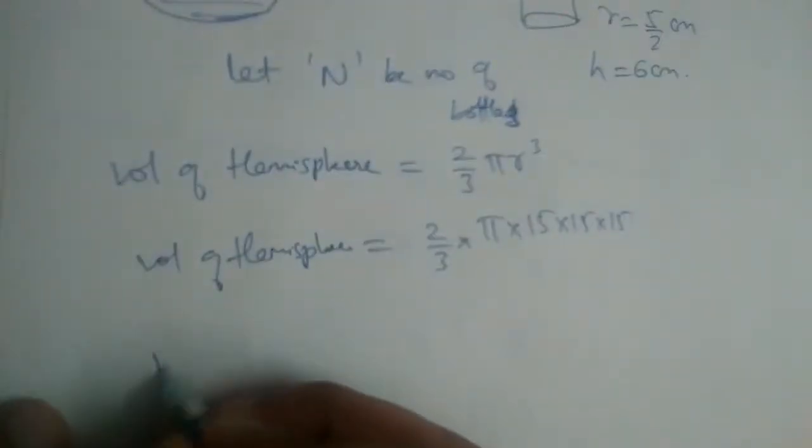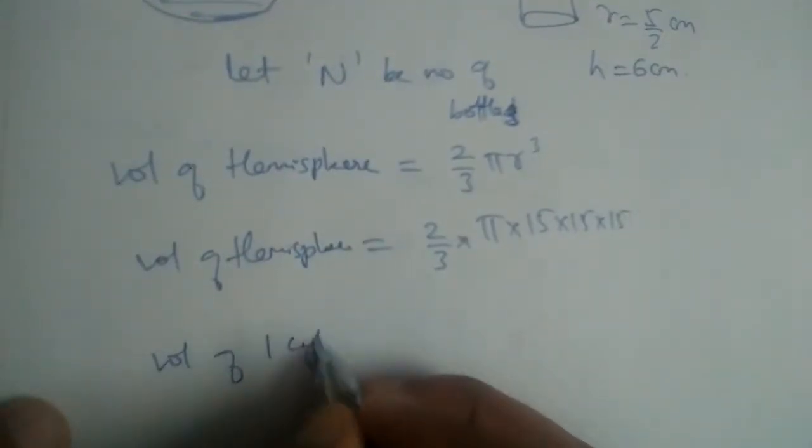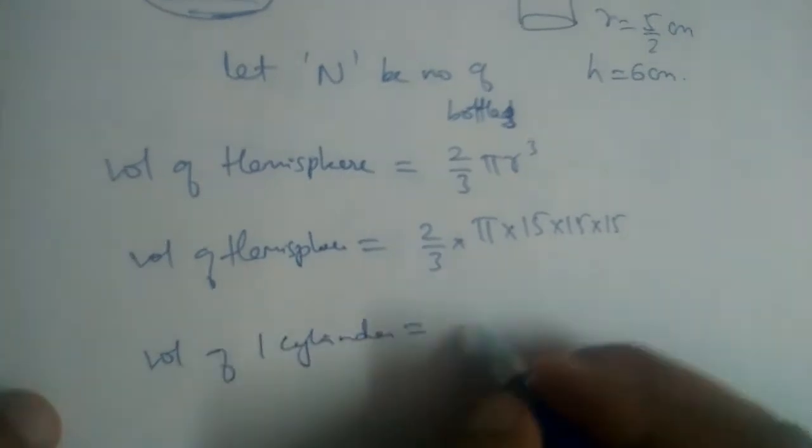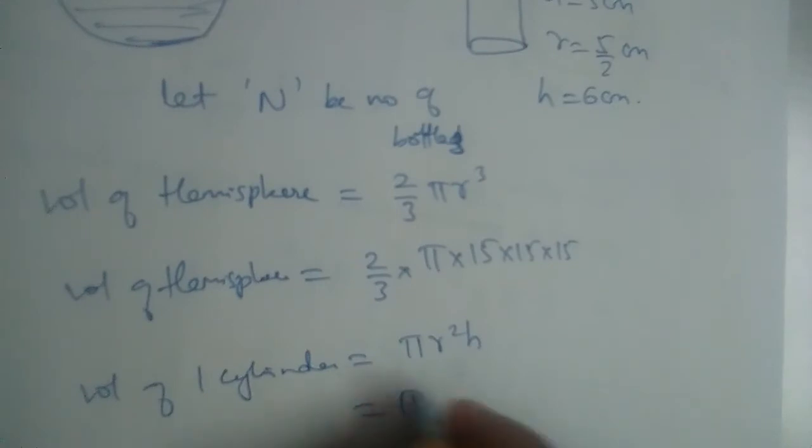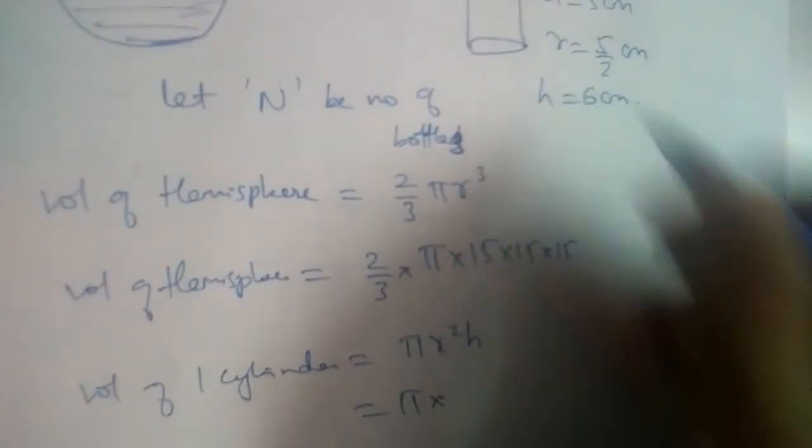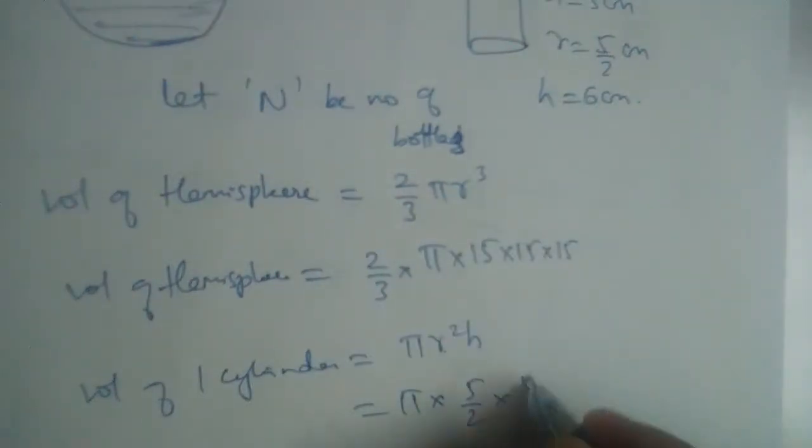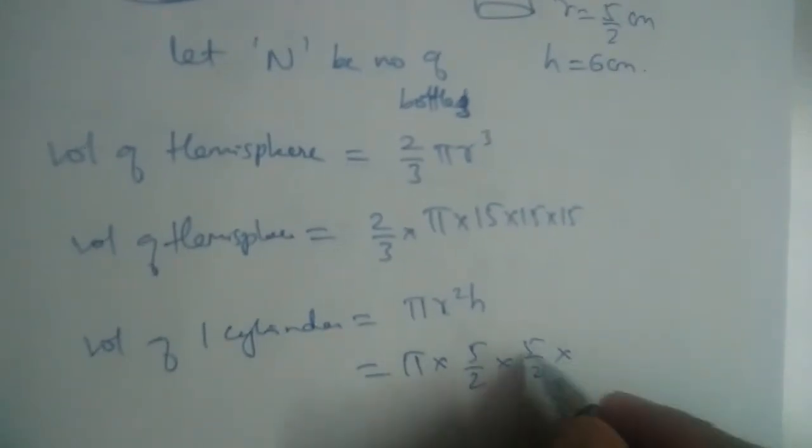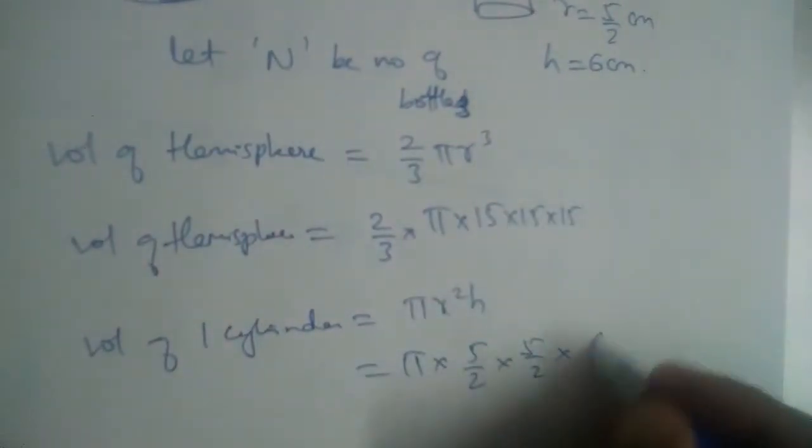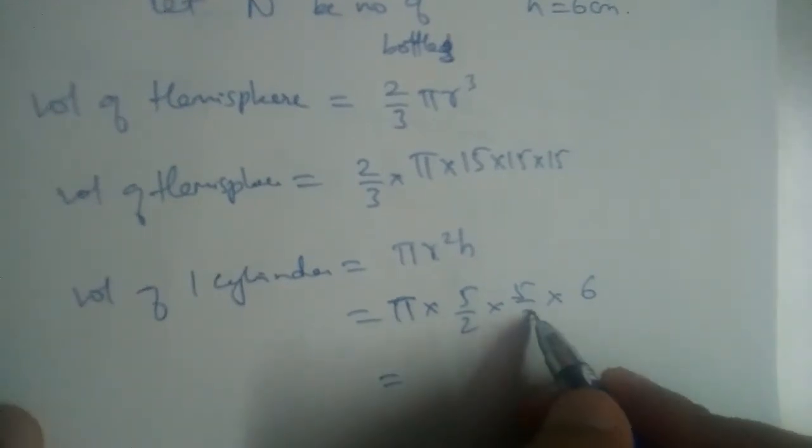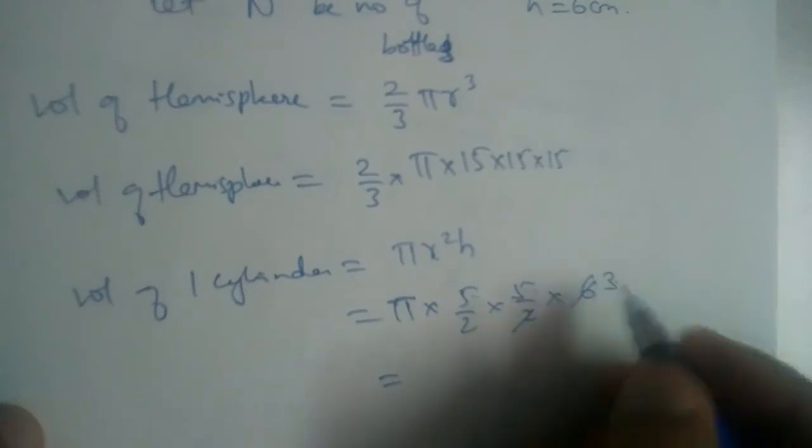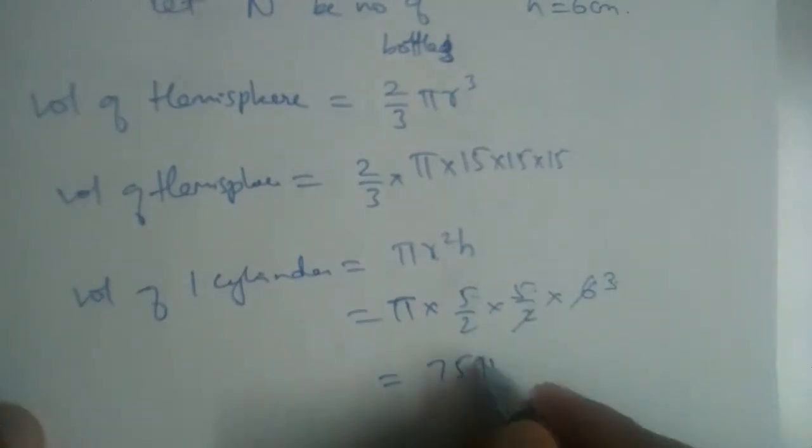Now we need to find the volume of one bottle. The volume of one cylinder is π r² h, so it is π times 5/2 times 5/2 times 6. This equals 75π/2. This is the volume of one cylinder.